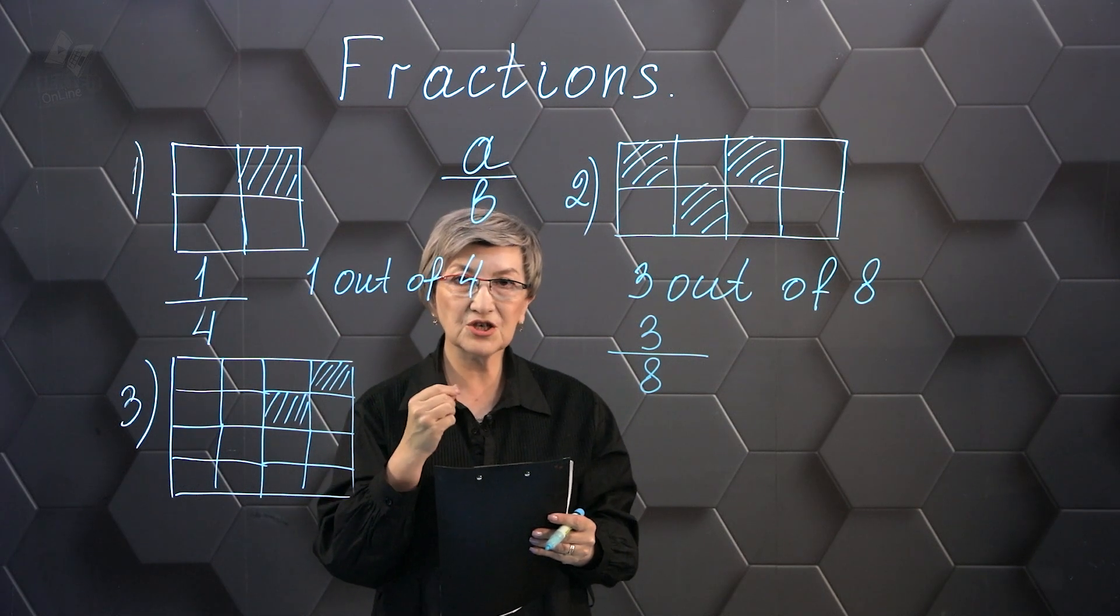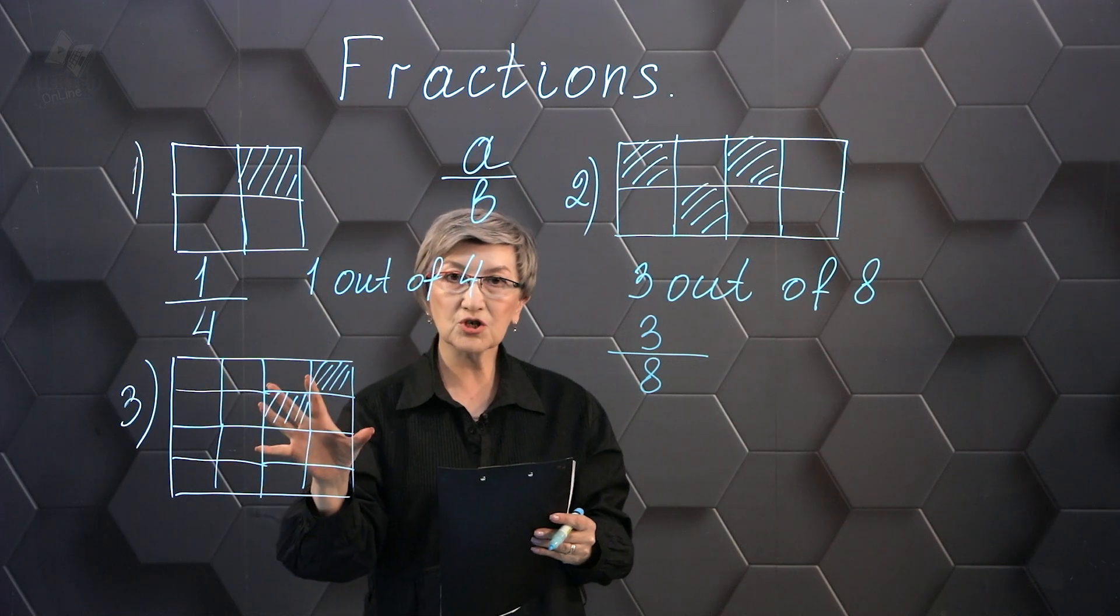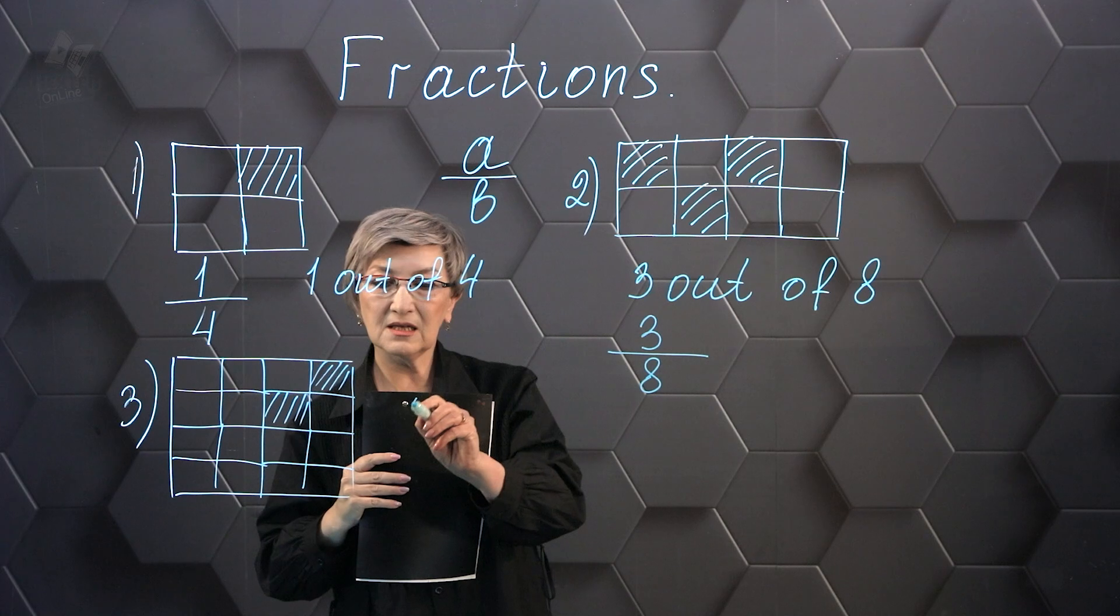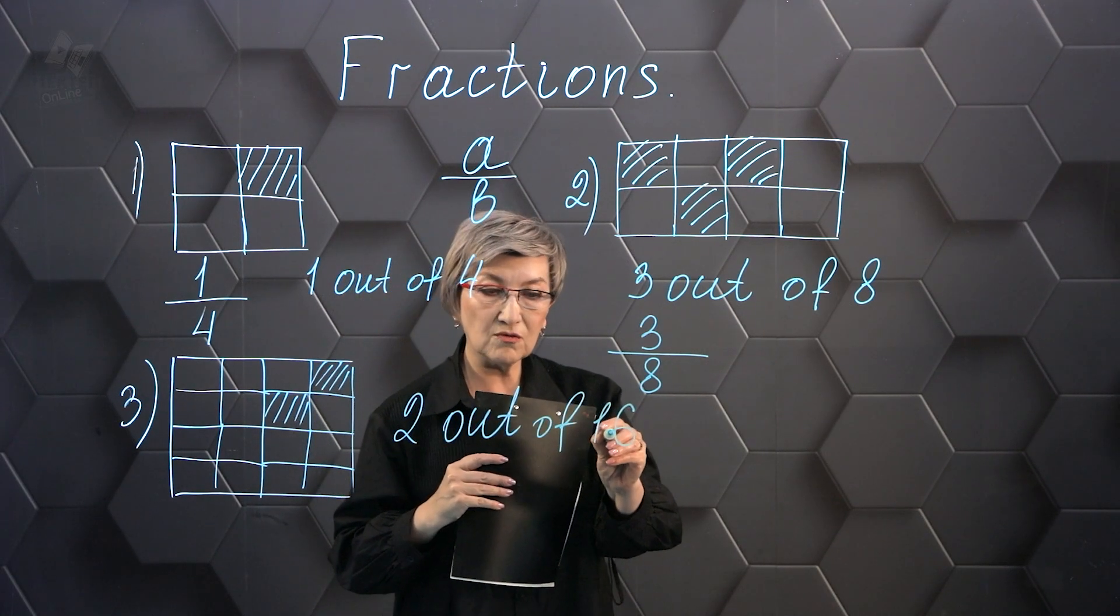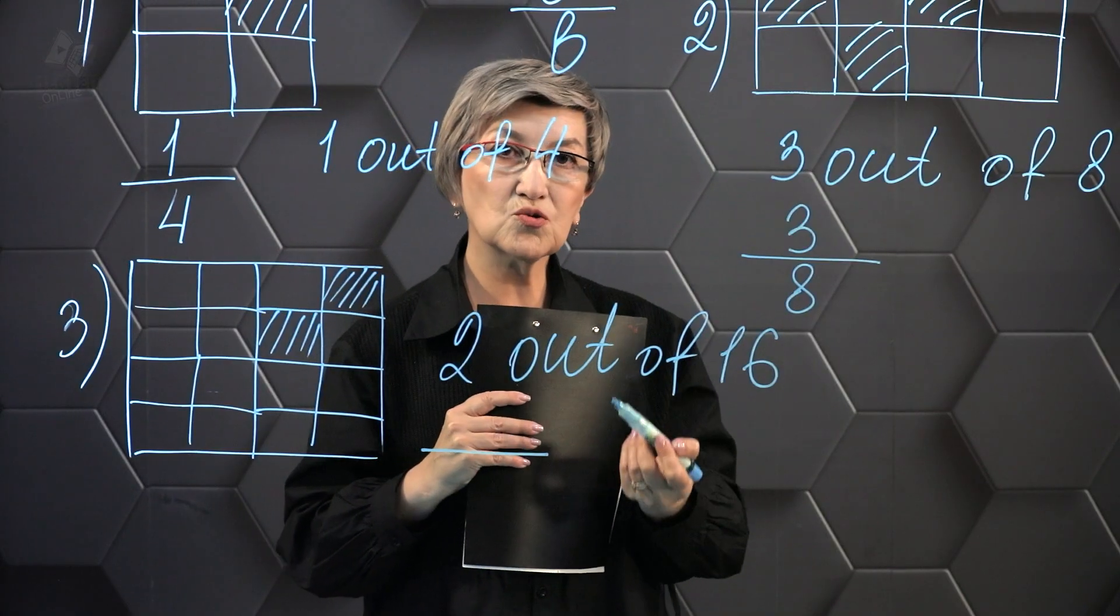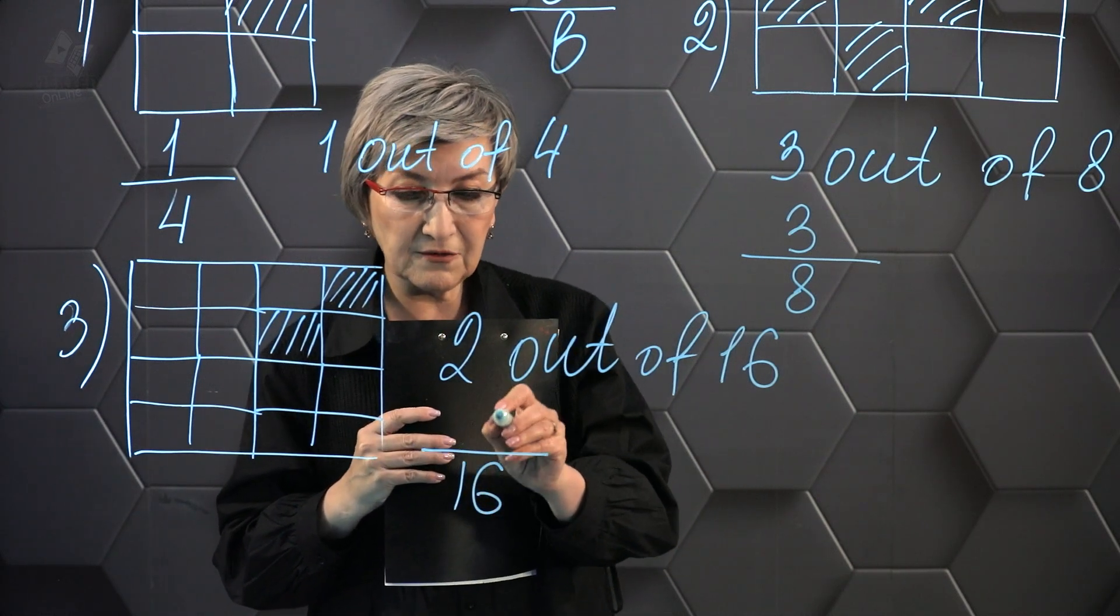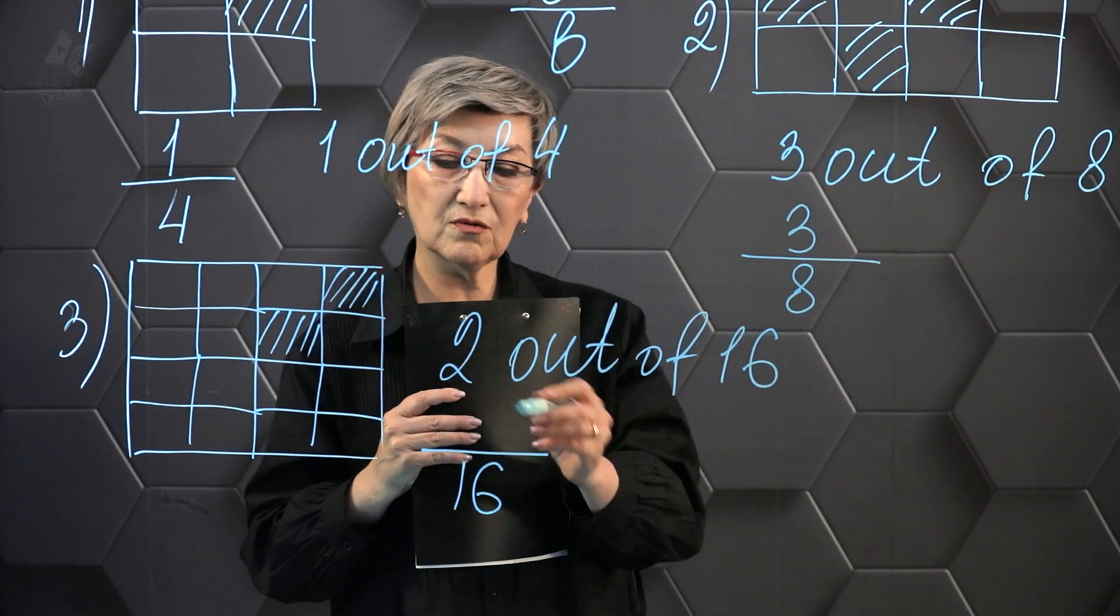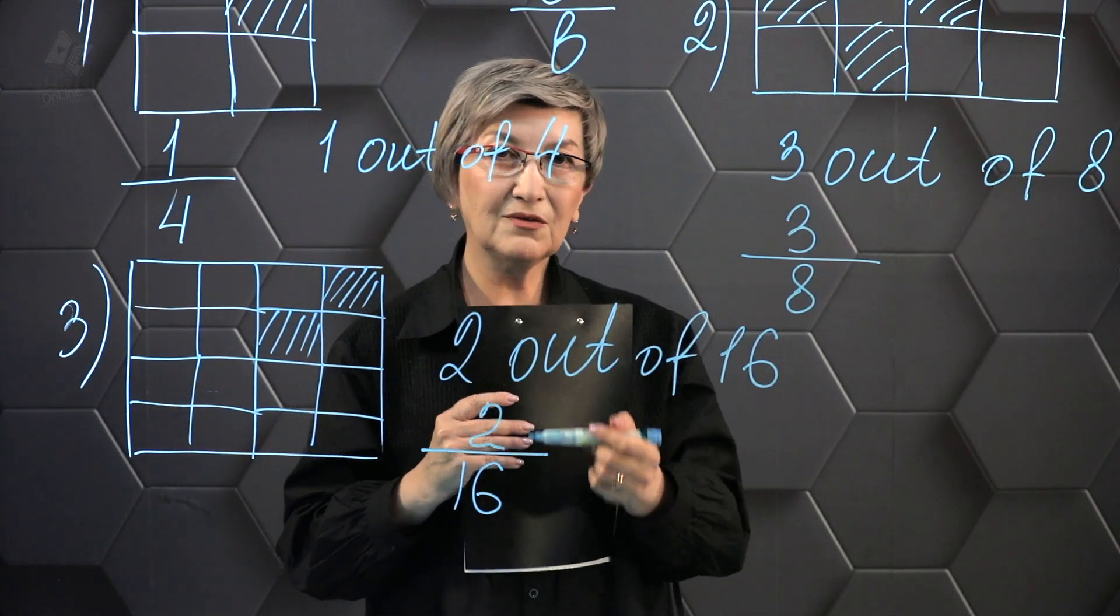Now I have the same parts into which I divided our square. Let's count the number of these parts. The total number of these parts is 16. And two of the 16 parts are shaded. Then I can write the fraction. On the fraction line, I write the number of all the parts. That's 16. And above the fraction line, I'll write the number of parts that are shaded. That's 2. The result is a fraction of 2 sixteenths.